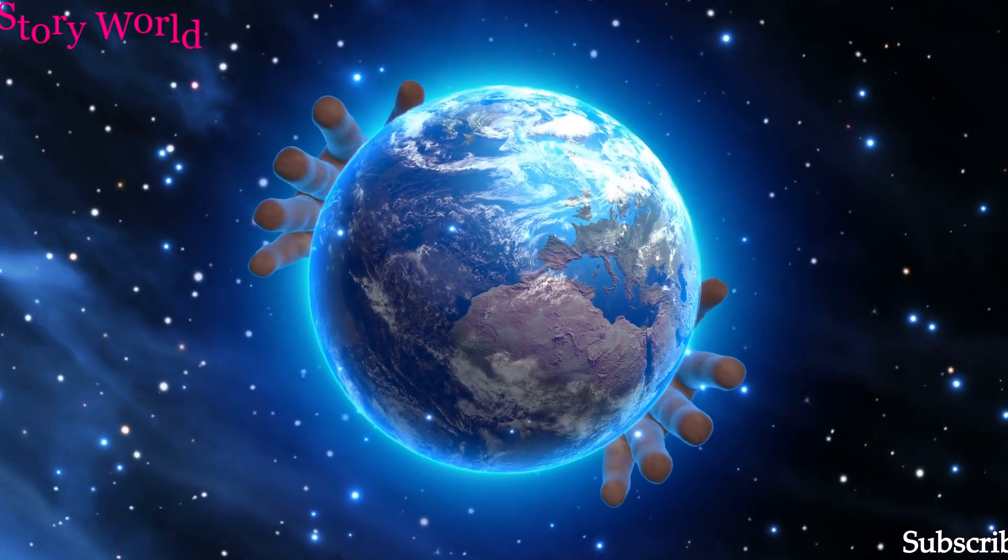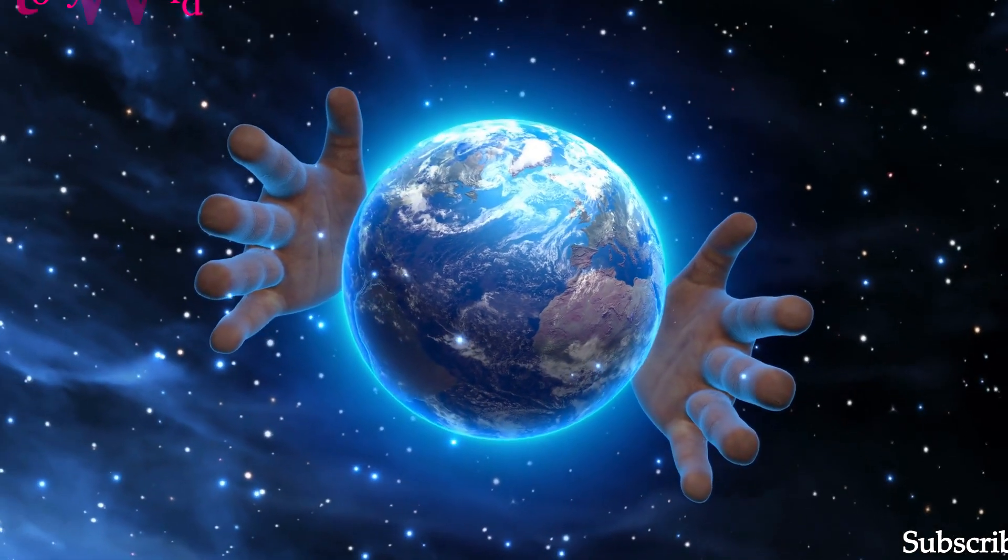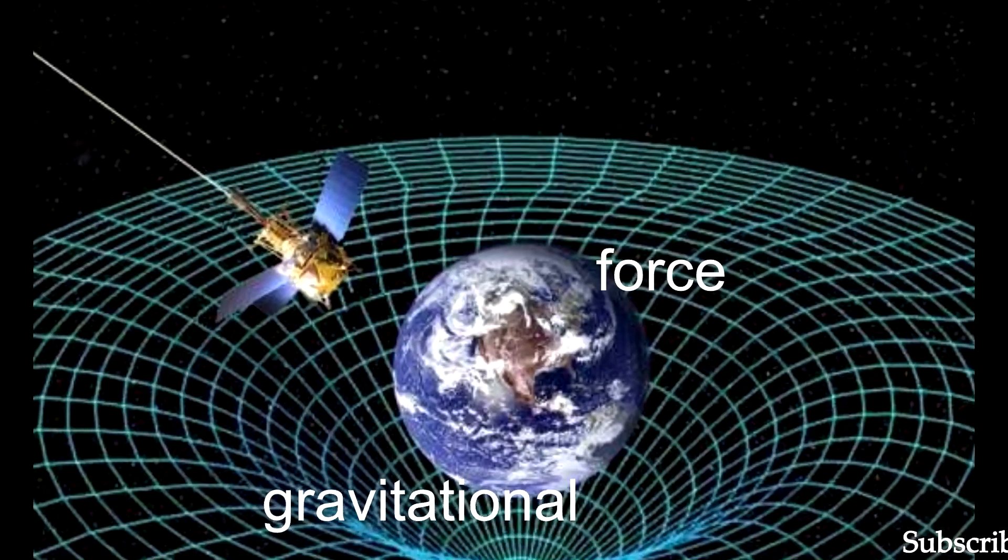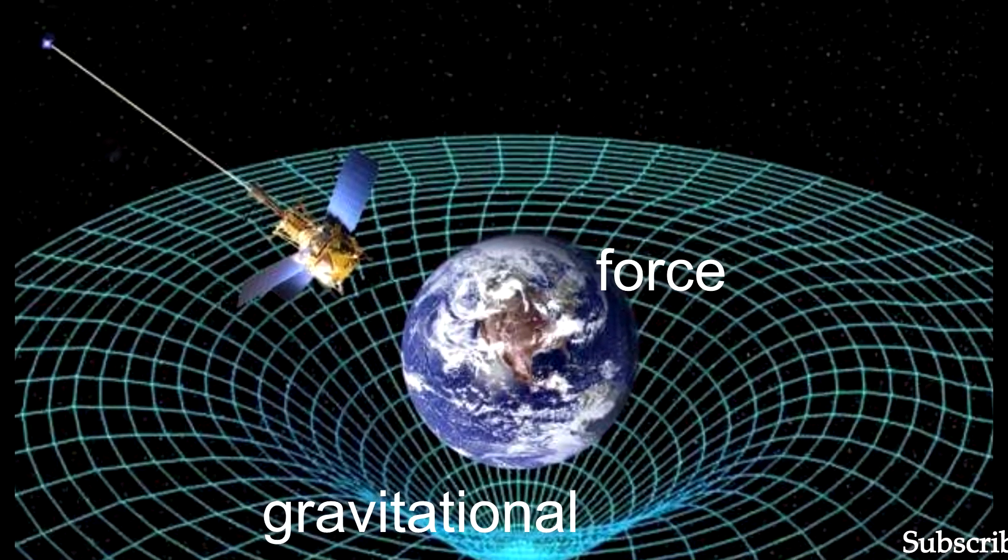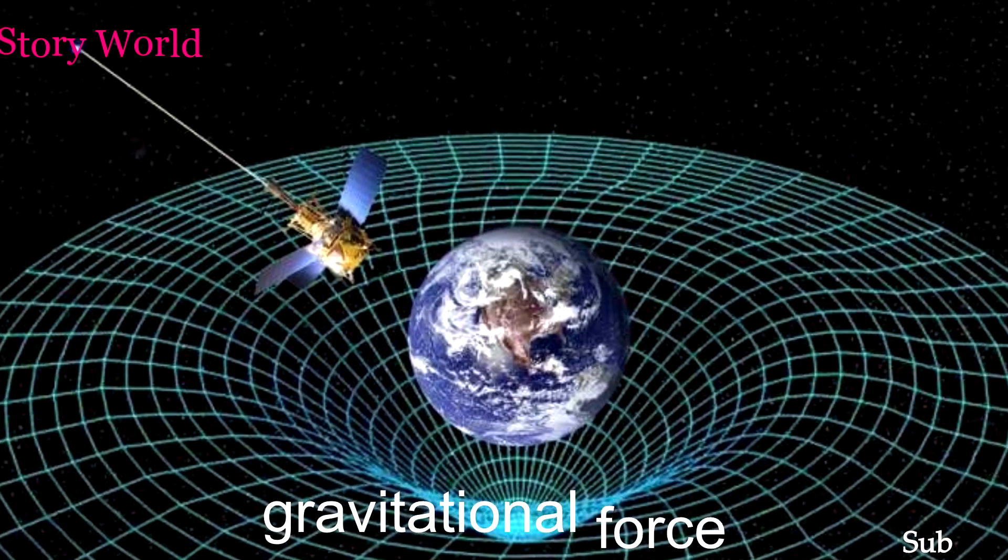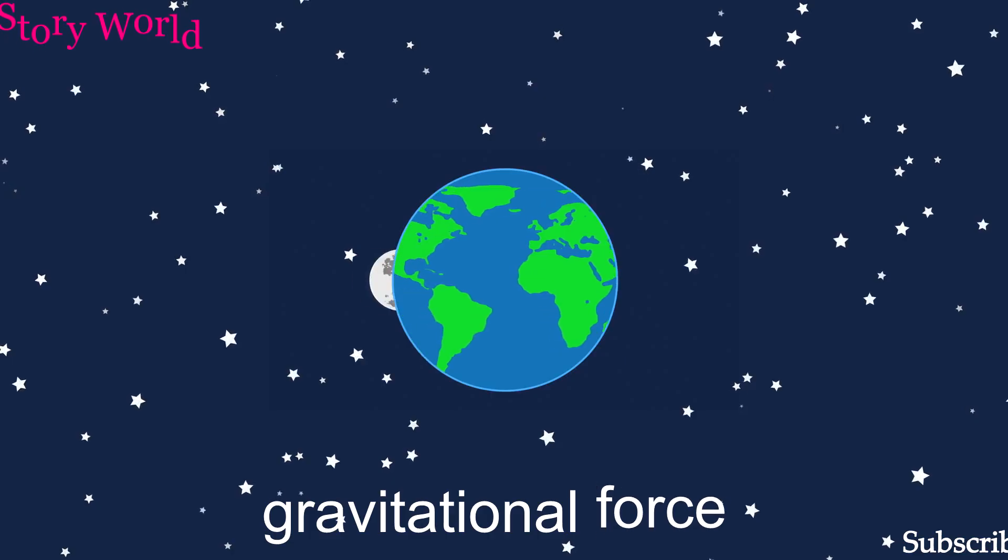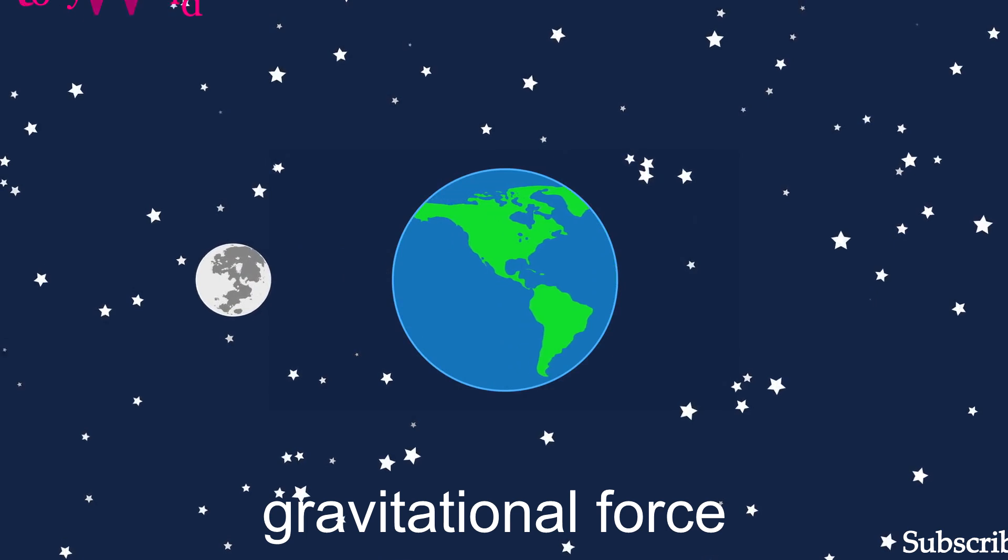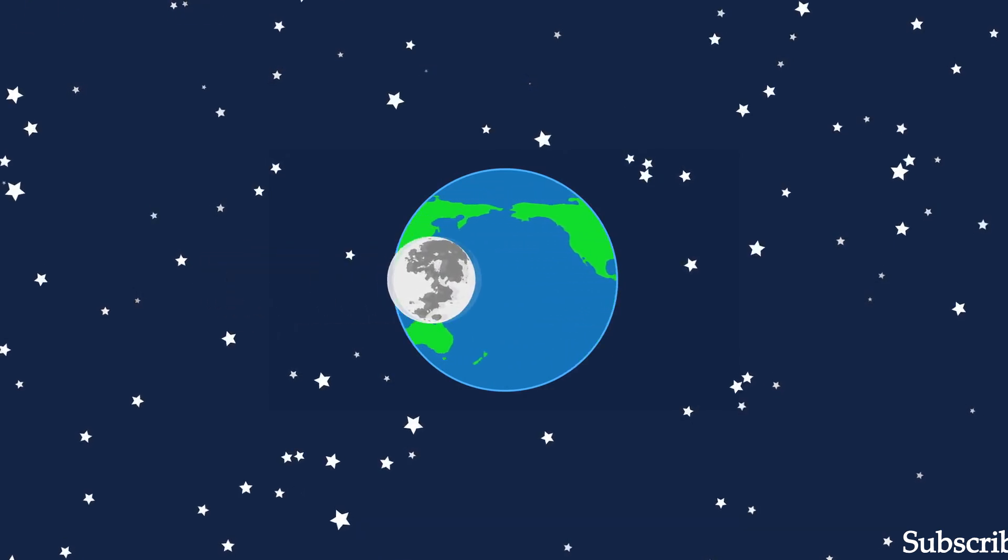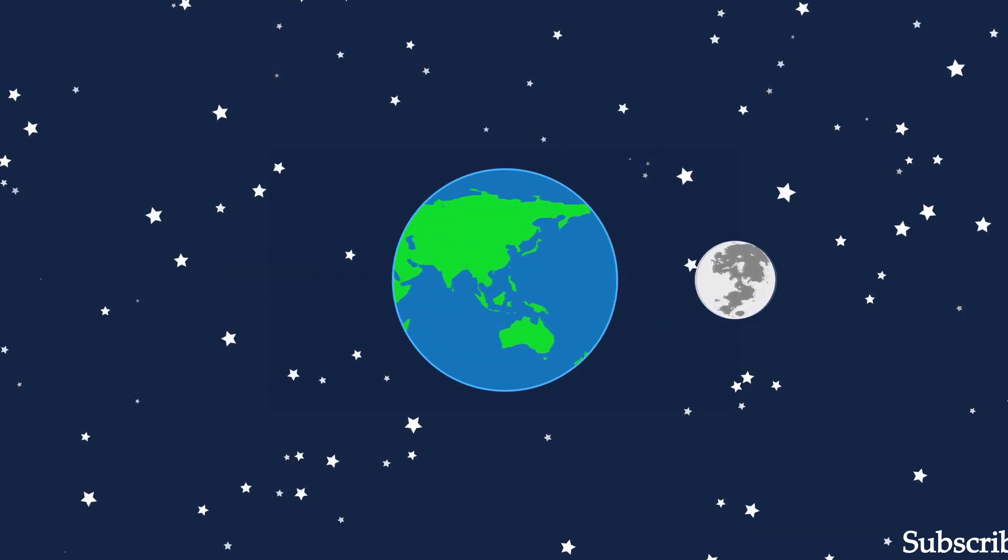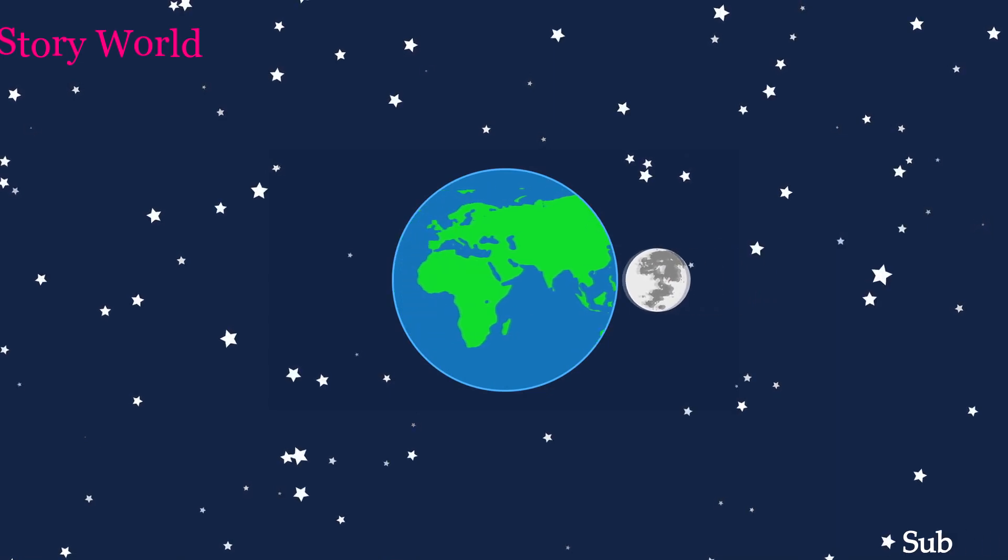There are two major force fields of the Earth. The gravitational field is the force at a distance that attracts objects towards the center of the Earth or toward any other objects having mass.